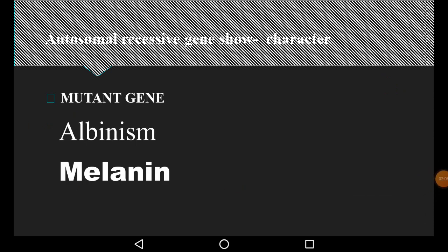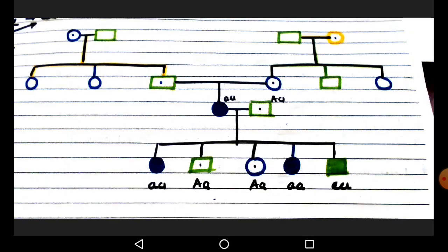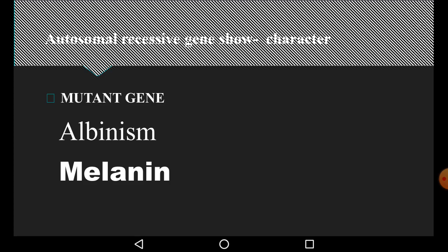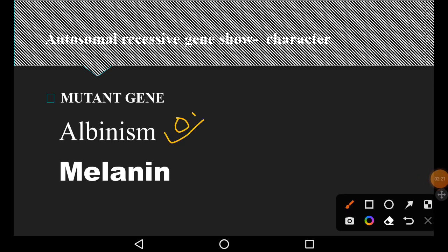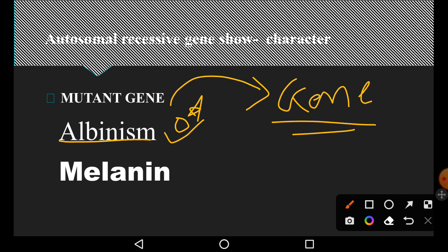This autosomal recessive gene which is seen in disorders? The basic example of genetic disorders is albinism. Here I have written one word called mutant gene. The mutant gene means that in the gene sequence there are some changes, so the gene is converted into mutant gene. The mutant gene which causes this type of disorder is albinism. This is one type of disorder which is called skin disorder.